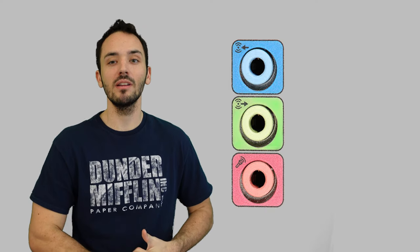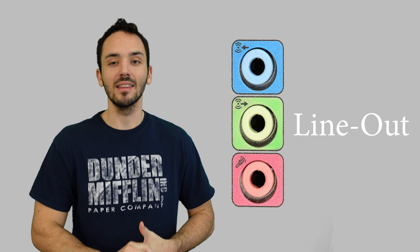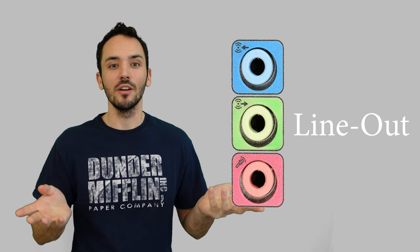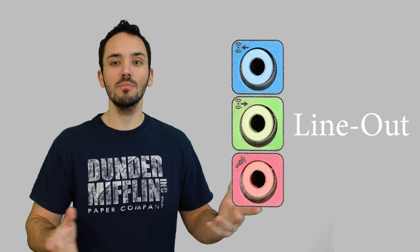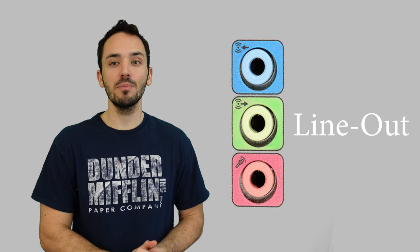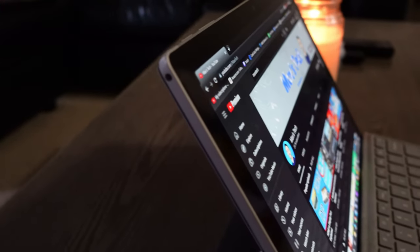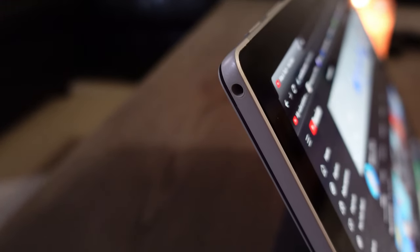Every computer is going to have at least one of these, and this is going to be the green one. This green one is line out, and line out is basically going to be your speakers. Typically this will be your front speakers. It can also be your headphones. And if you have a laptop, this can probably be the only port. It just might not be green, and that's fine, it's still your line out.